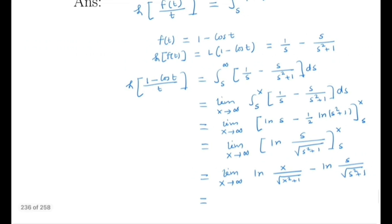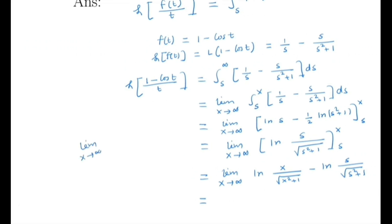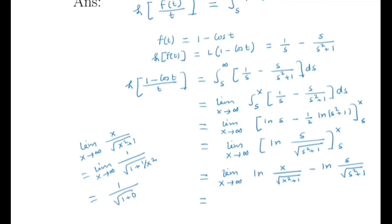Now we compute the limit as x tends to infinity of x / √(x² + 1). Dividing numerator and denominator by x gives 1 / √(1 + 1/x²). As x tends to infinity, 1/x² tends to 0, so this limit equals 1 / √1 = 1.